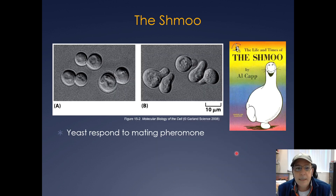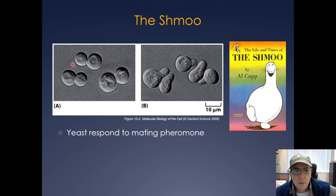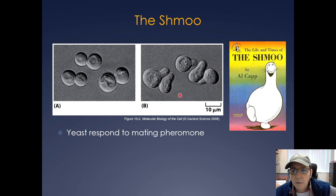Saccharomyces cerevisiae, or yeast, has been an invaluable tool in understanding cell signaling, in part because it's so genetically tractable. Here's a plain haploid yeast cell growing in culture. If you add a mating pheromone to it, the yeast actually starts to change its shape and produces these mating projections. This is what's called the SHMU in yeast — you can see the mating projection starting to form.